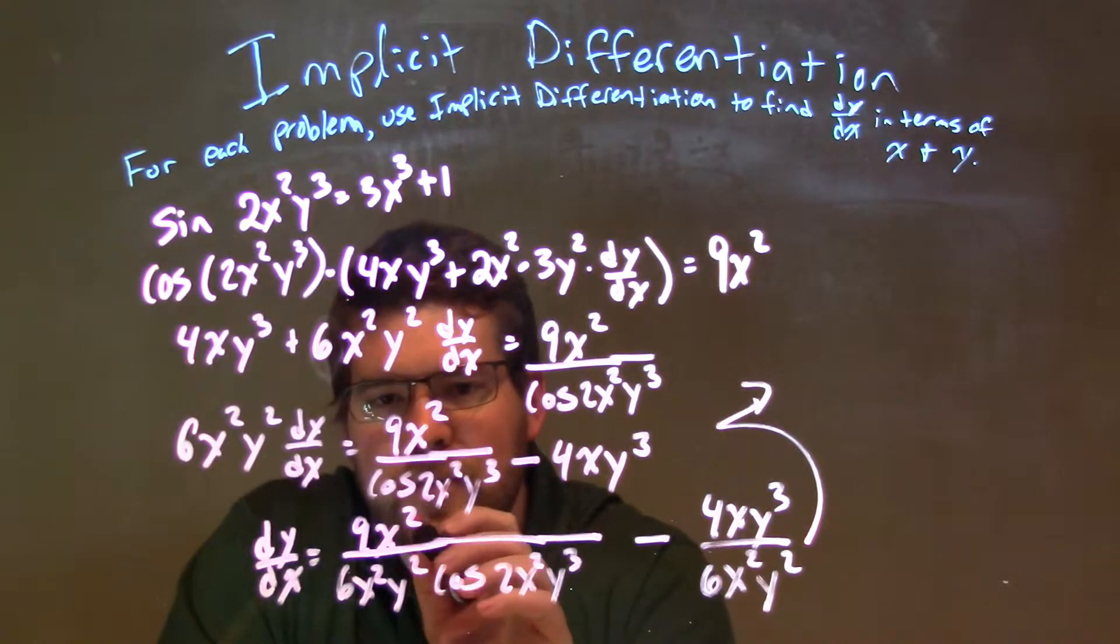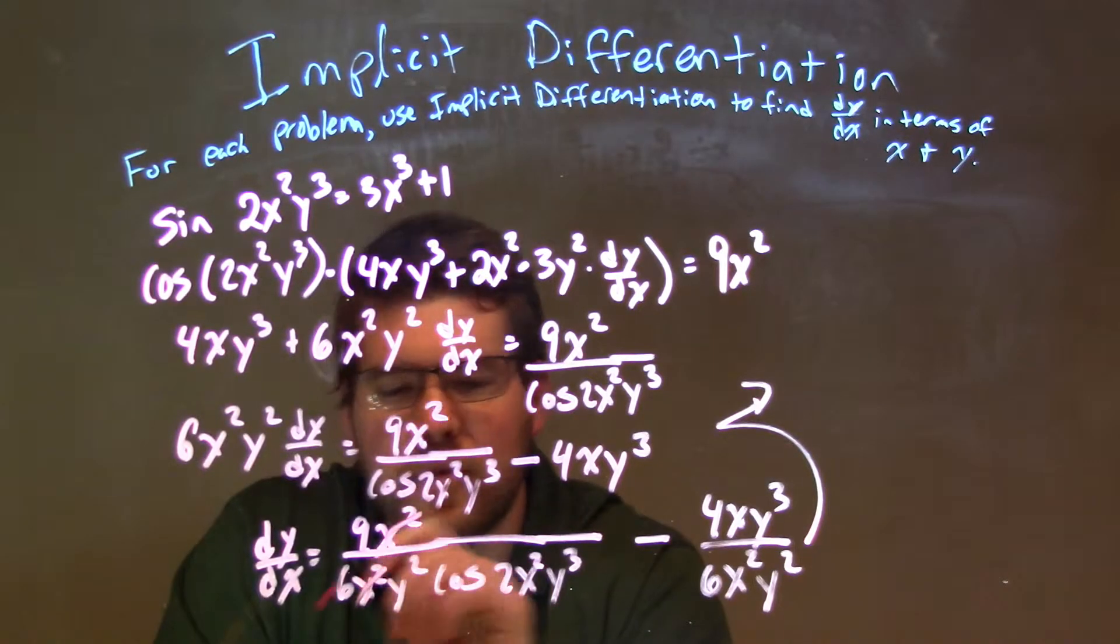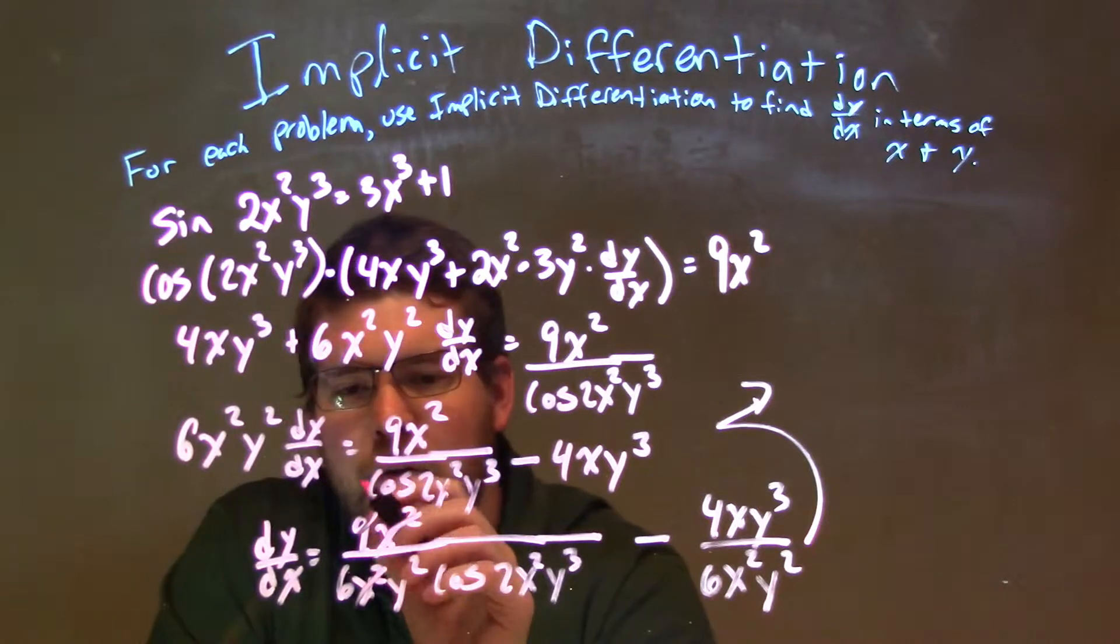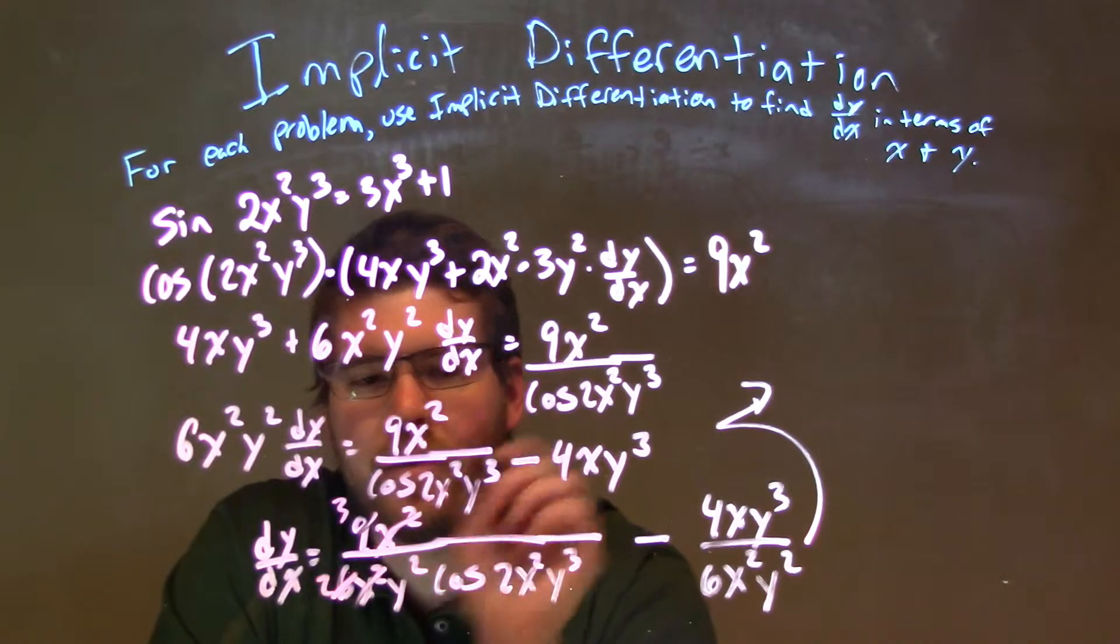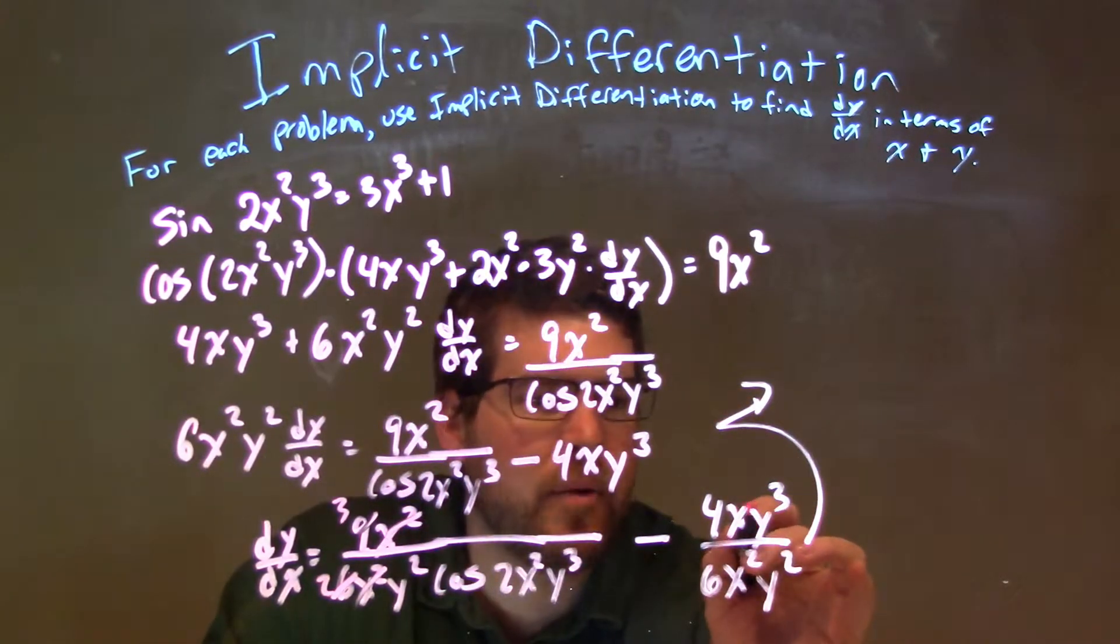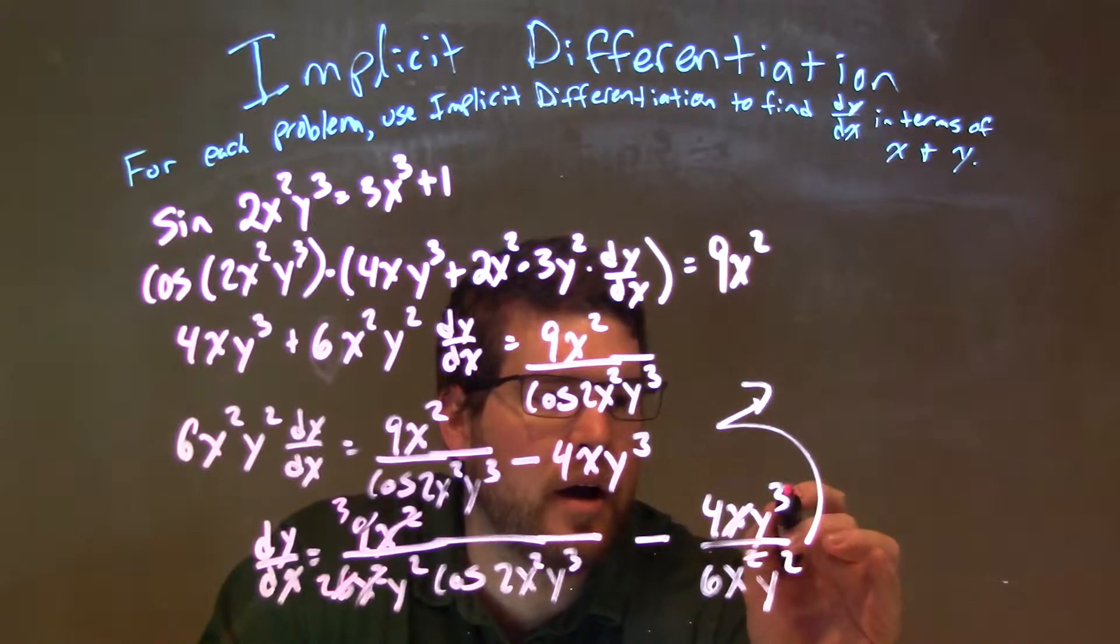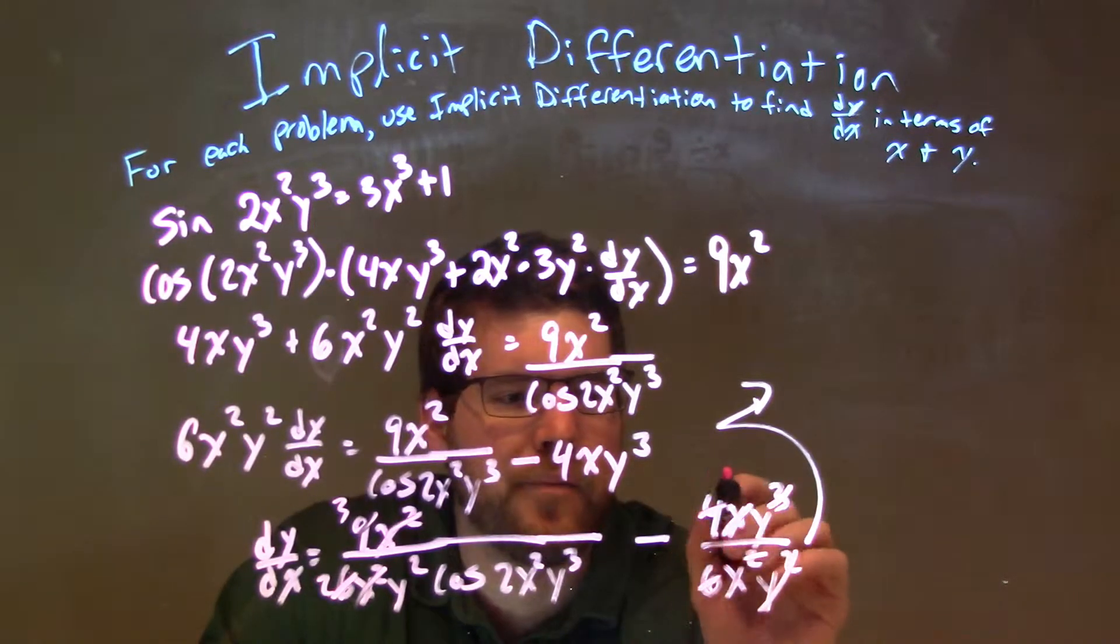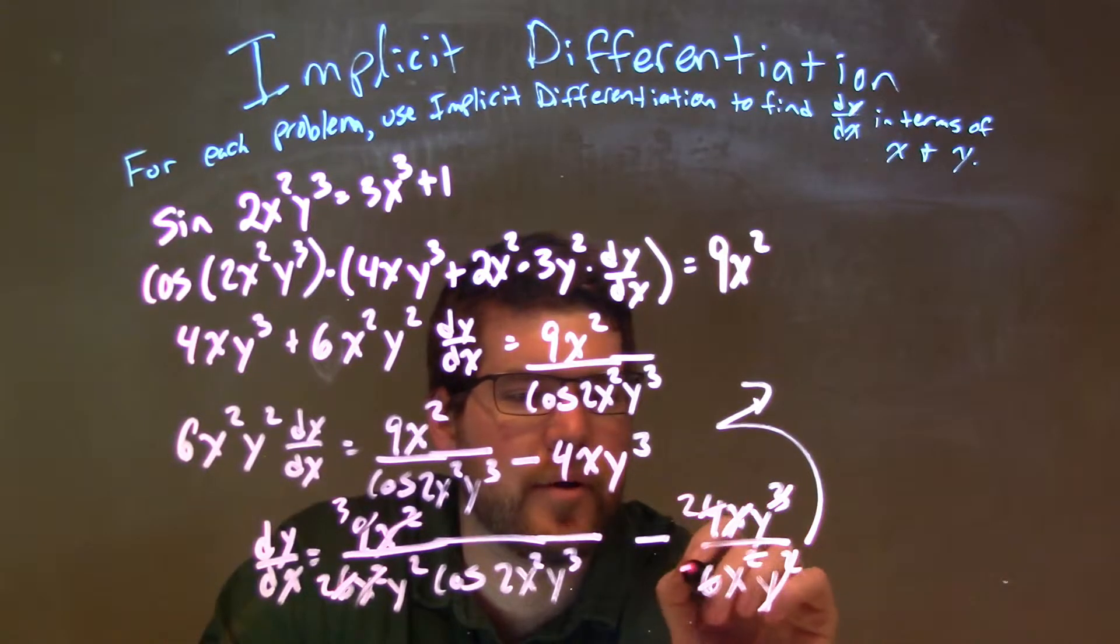All right, so the x's can cancel, x squared can cancel out here. 9 and 6 are both divided by 3, so 3 and 2. Here, 1x cancels with this one, 2 of the y's cancel, and the 4 and 6 become 2 and 3.